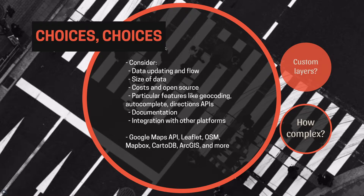If you're just doing something fairly simple, like a contact page map or a simple map to show a few locations, Mapbox is probably going to be overkill, because it does require quite a lot of knowledge of geographic data and styling. You have to learn a whole system, and honestly that system is a bit much for something really simple. So a big question to ask is: how complex is your map? If you're going to have multiple layers, very large pieces of data, or you really want something super beautiful and really custom, then Mapbox starts to be a viable thing.